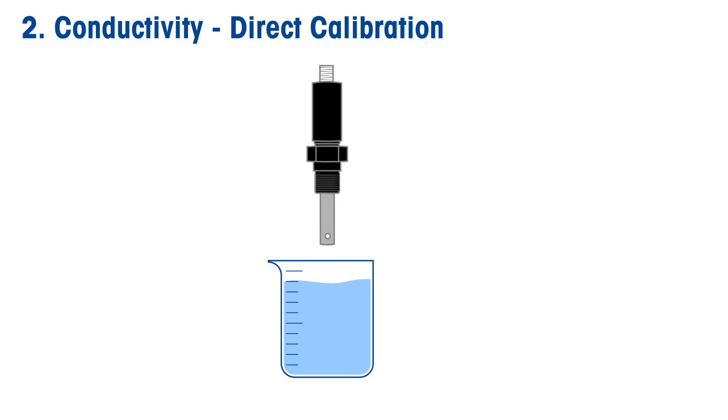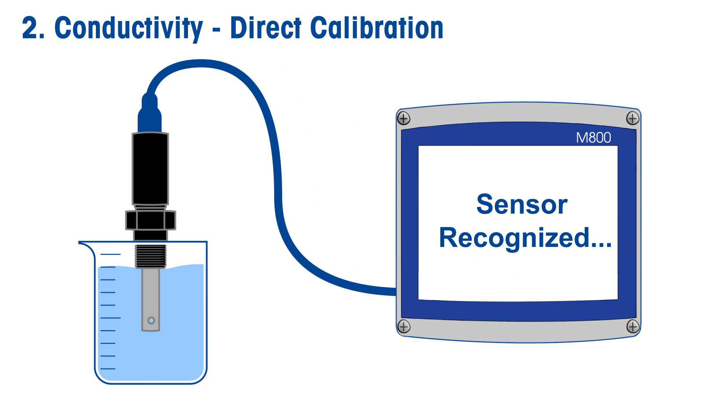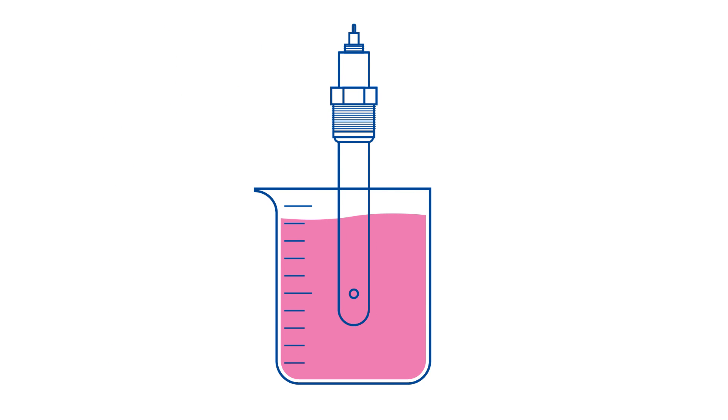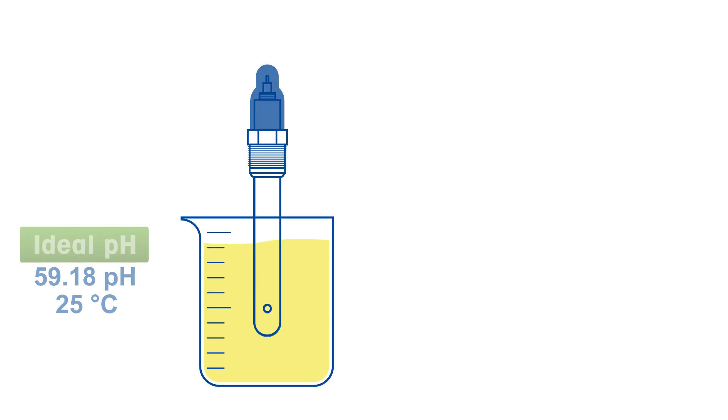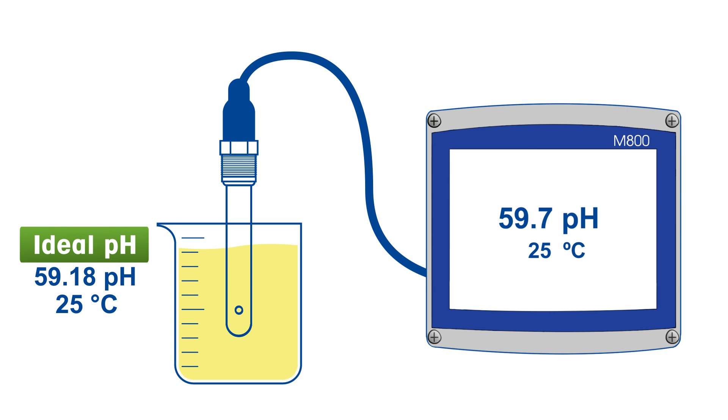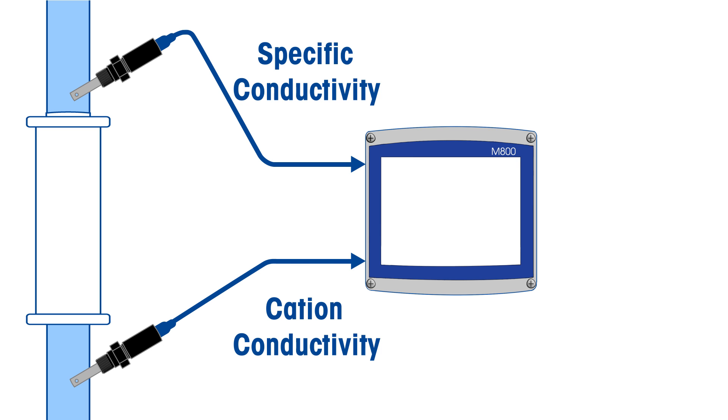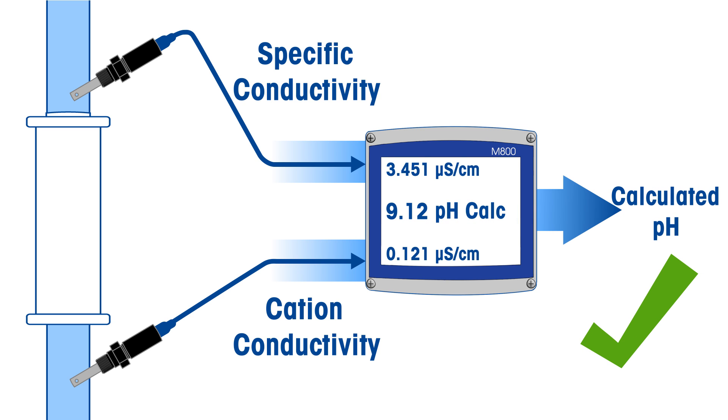Second, conductivity sensors can be directly calibrated with minimal introduction of error. All pH reference electrodes have a variable junction or diaphragm potential that can change between buffer calibration and process measurement, introducing some uncertainty to subsequent measurements. This makes calculated pH based on conductivity significantly more accurate.